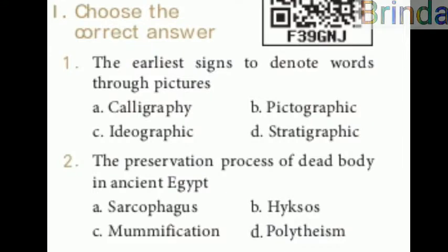Now children, we will see the book back exercise. Choose the correct answer. First one: the earliest signs to denote words through pictures. Options are pictographic, logographic, ideographic, stratigraphic. The answer is pictographic.